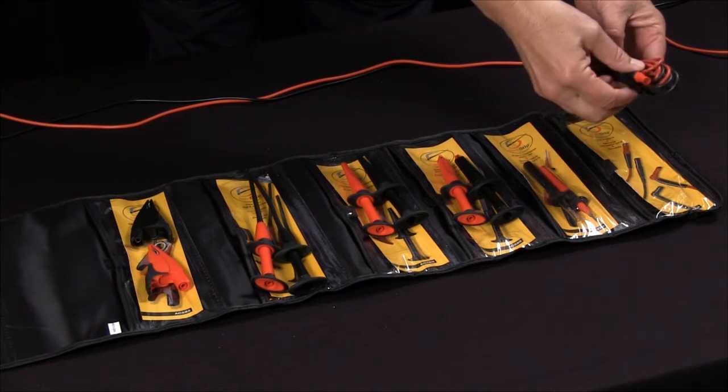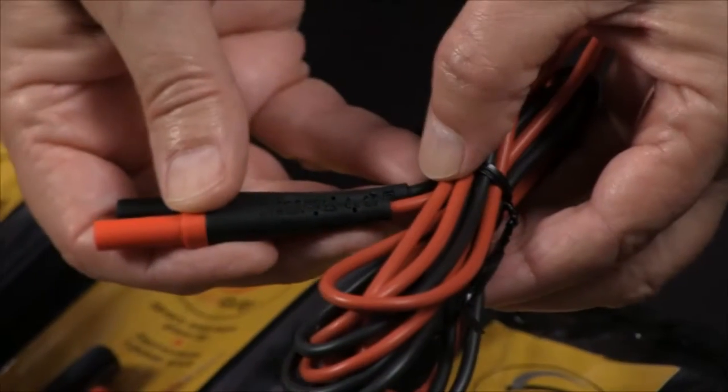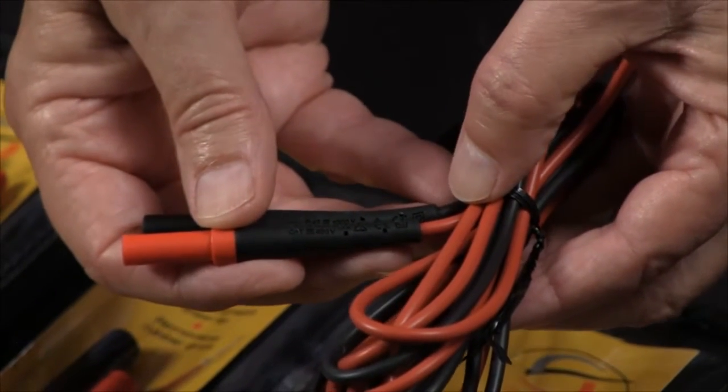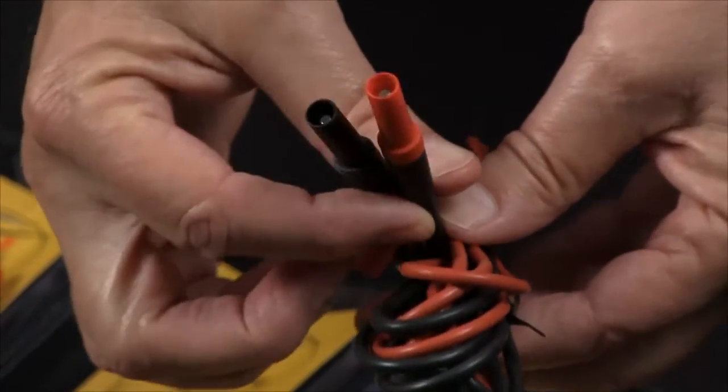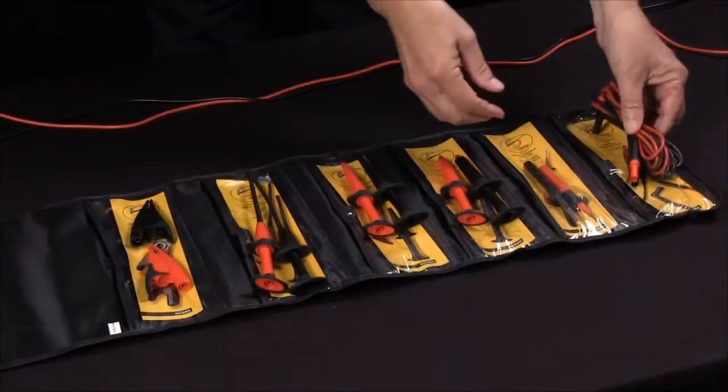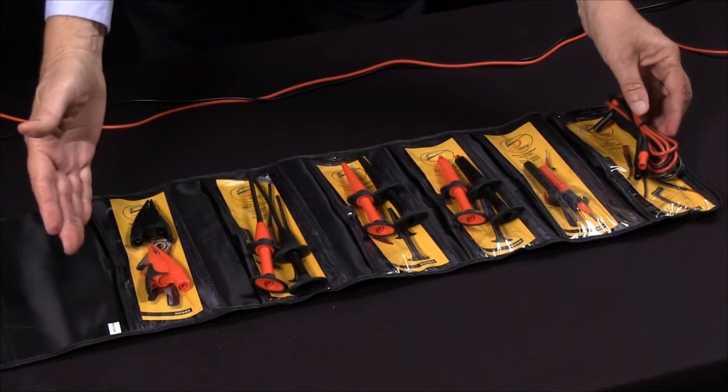These accessory test leads need to have the same safety ratings as your test equipment. This particular set is a modular set with the bananas on both ends so that you can adapt them to different kinds of accessories.